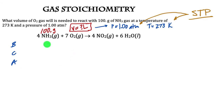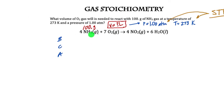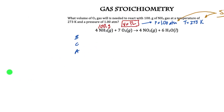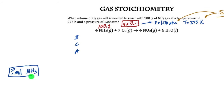I'm going to go back to the traditional method using the BCA table. The first thing to do is find the moles of ammonia — that's my first step.